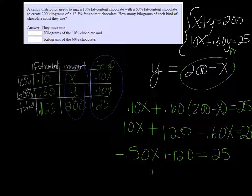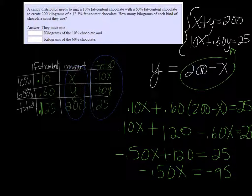Subtract that 120 on both sides and we get negative 0.50x equals negative 95. And then if we divide both sides by negative 0.50, negative 95 divided by negative 0.50 gets us 190. So x equals 190. Now remember x plus y equals 200, so y must be 10.